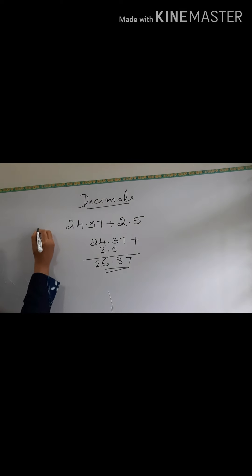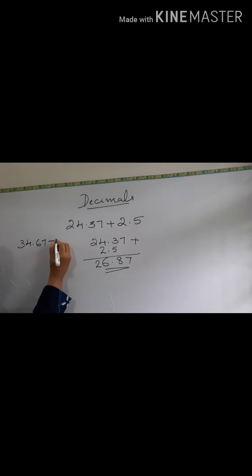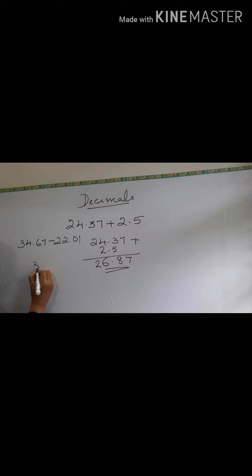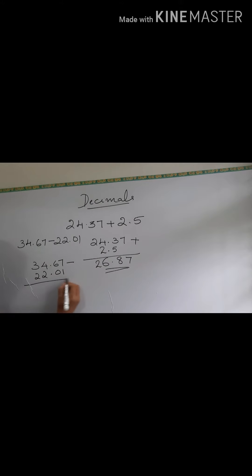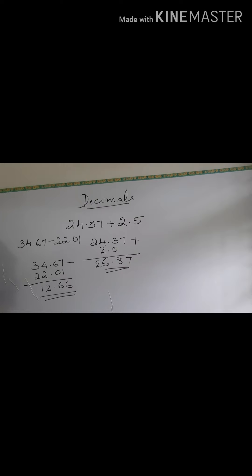Now when you are doing the subtraction: 34.67 minus 22.01. First we write 34.67 minus, then put the decimal here, 0, 1 to the right, then 22. Subtract: 7 minus 1 is 6, then 6, then 4 minus 2 is 2, then 3 minus 2 is 1. Clear? Remember?